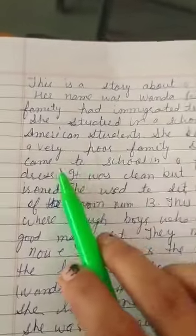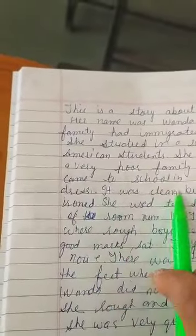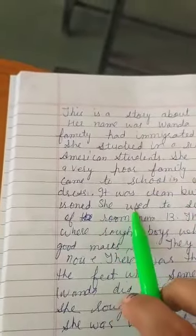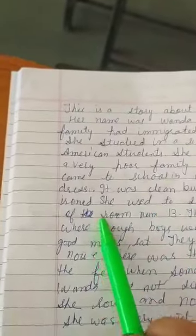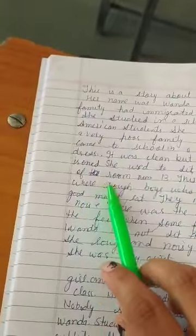Her family had immigrated to America. She studied in a school with other American students. She belonged to a very poor family. Daily she came to school in a faded blue dress. It was clean but not properly ironed.